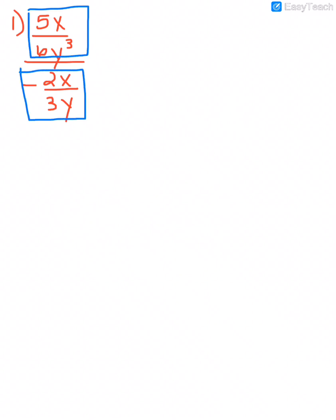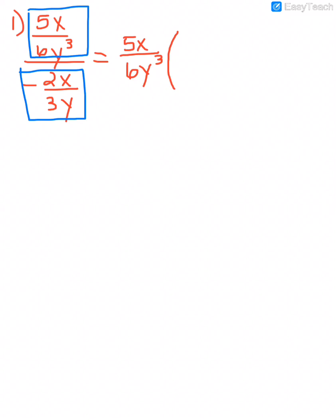If we have a fraction being divided by a fraction, we can rewrite it as the numerator times the reciprocal of the denominator — because remember, we can't divide a fraction by a fraction, we have to multiply by its reciprocal. Now that we've rewritten it, we can reduce things that are in the numerator with things that are in the denominator.